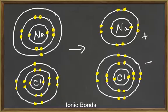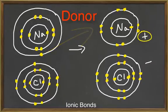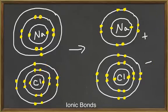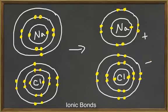In an ionic bond, one atom loses an electron to become a positively charged cation, and is called an electron donor. Another atom will gain that electron to become an anion, and is called an electron acceptor. The cation and the anion are electrically attracted to each other, because the opposite charges draw them together. This attraction is called an ionic bond.